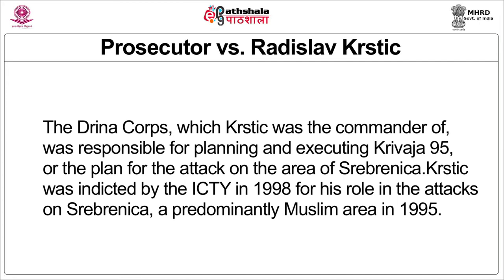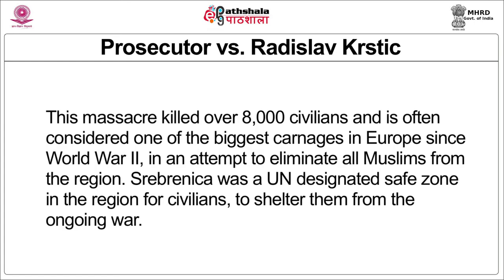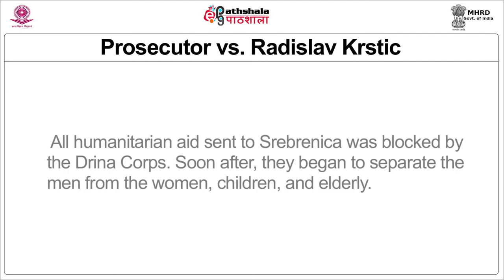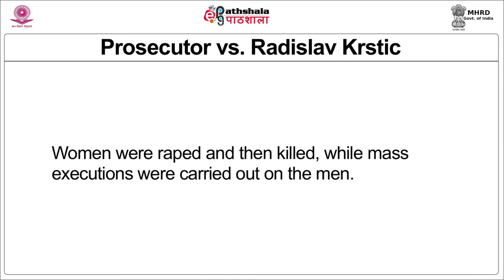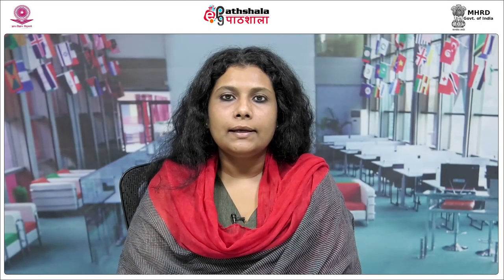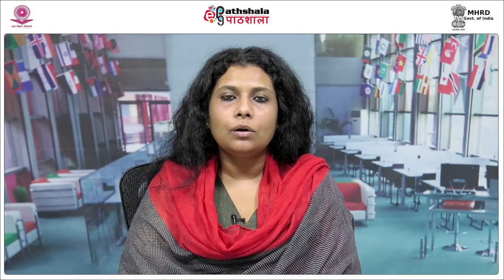Srebrenica was a predominantly Muslim area in 1995. The massacre killed over 8,000 civilians and is often considered one of the biggest stand-alone carnages in Europe since World War II. In an attempt to eliminate all Muslims from the region, Srebrenica had been designated a safe zone by the United Nations to keep civilians safe and shelter them from the ongoing war. The forces of Krstic, under the Drina Corps, blocked all humanitarian aid being sent to Srebrenica. Soon after, they began to separate the men from the women, children, and elderly. Women were then raped and killed, while mass executions were carried out of the men. In one morning alone, 8,000 Muslim men and boys were lined up against a wall and shot to death.